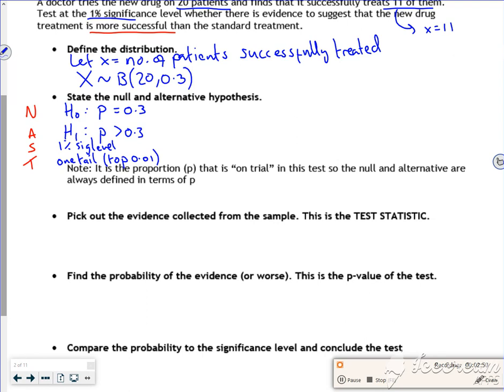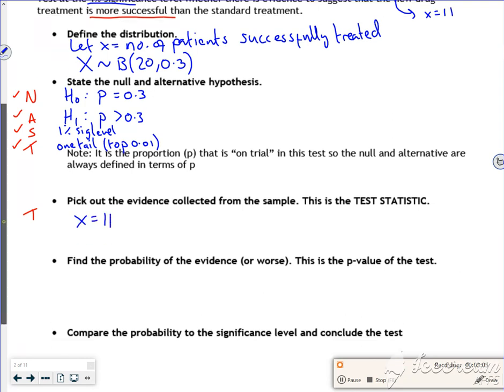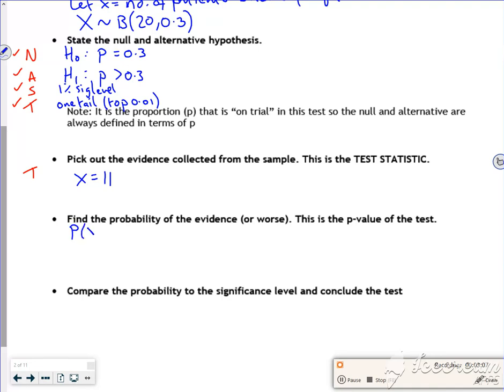So now I've done the null, the alternate, the significance level, the tail. So now I've got the test. So I've got to pick out the test stat, so that's X is 11. Now because it's the top, I'm going to do the probability that X is greater than or equal to 11.